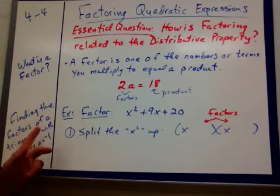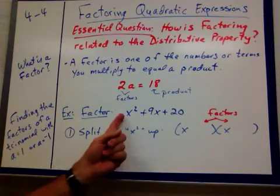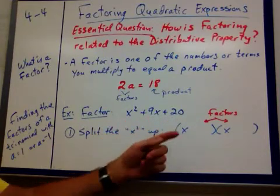We're going to start off with finding the factors of a trinomial with a equal to 1 or a equal to negative 1. And remember, a is still that same thing here, a, b, and c. That doesn't change.